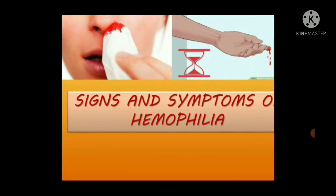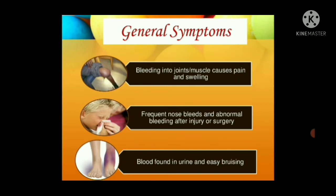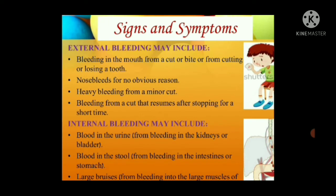Signs and symptoms of hemophilia — general symptoms: bleeding into joints and muscles causing pain and swelling, frequent nosebleeds, abnormal bleeding after injury or surgery, blood in urine, and easy bruising on the skin. External bleeding may include bleeding in the mouth from a cut or bite, nosebleeds for no obvious reason, heavy bleeding from a minor cut, and bleeding from a cut that resumes after stopping. Internal bleeding includes blood in urine, blood in stool, and large bruises from bleeding into large muscles.